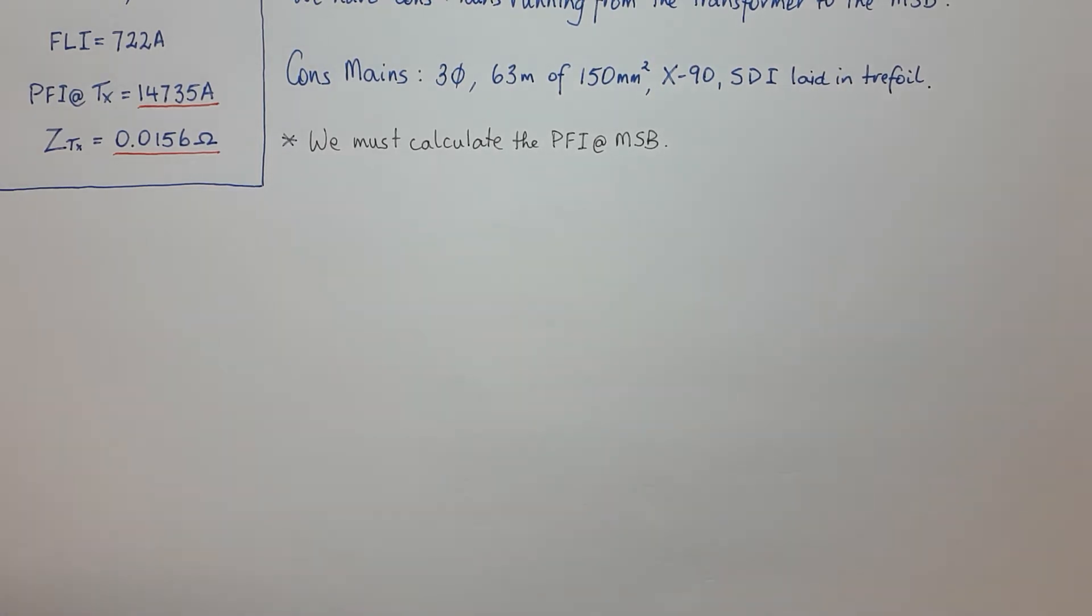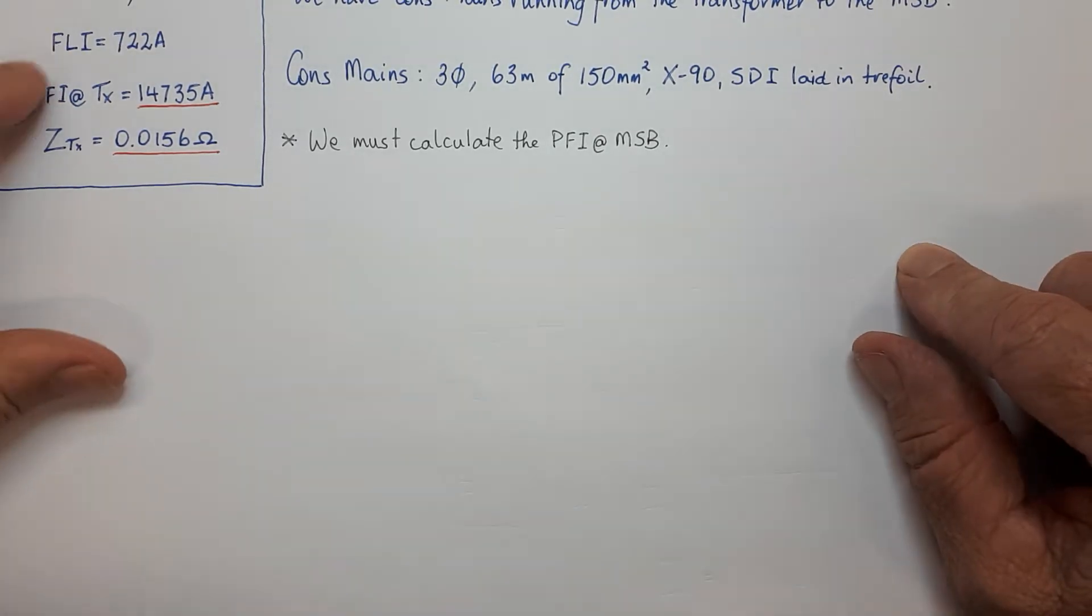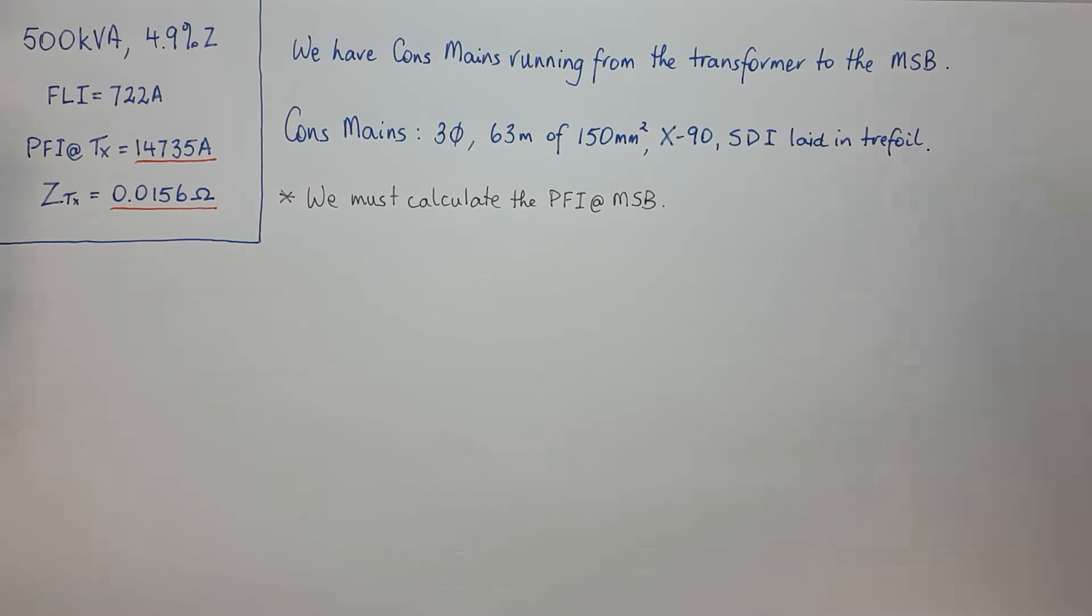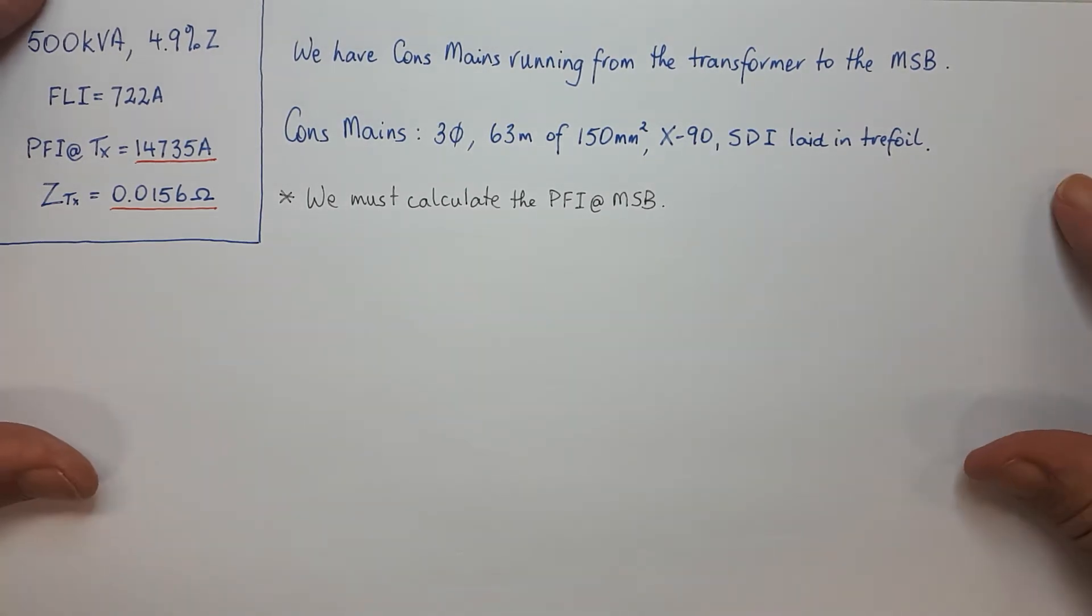Carrying on from the last question where we calculated the full load current and the prospective fault current at the transformer and the impedance of the transformer, we've got them all down here. I've listed all the stuff that we found in the last question.